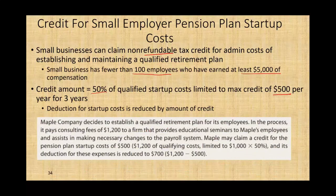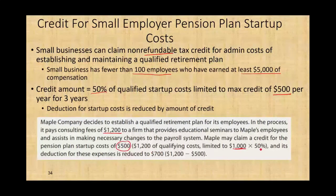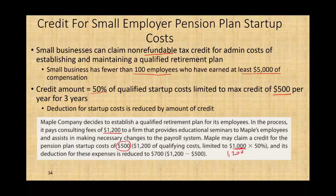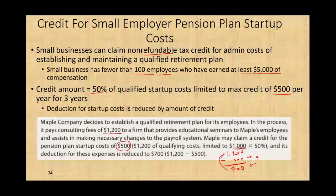Maple Company decided to establish a qualified retirement plan for its employees. In the process, it pays consulting fees of $1,200 to a firm that provides educational seminars and assists in making necessary changes to the payroll system. Maple may claim a credit for the pension plan startup of $500, which is the qualifying cost of $1,200 — but limited to $1,000 per year — times 50%. Its deduction for these expenses is reduced by $500. So you get a credit of $500, you spent $1,200, and your tax deduction is $700 out of the $1,200. You cannot have the credit and at the same time claim the full tax deduction.